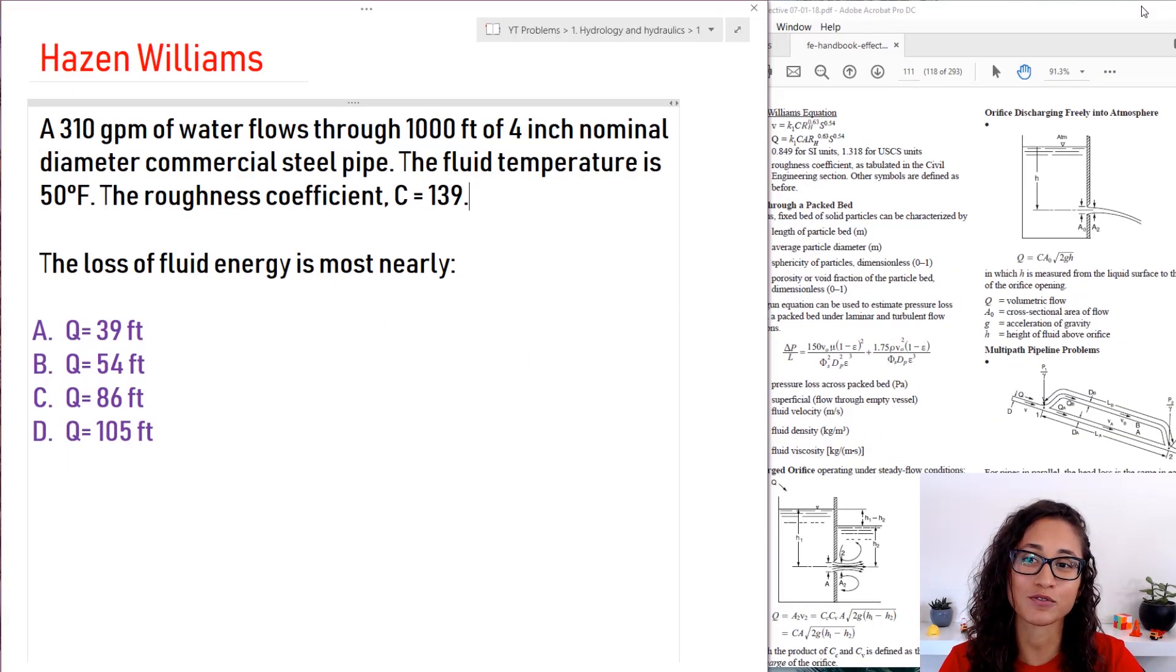Okay guys, so we're given a flow rate for water that's going through a 1000 feet pipe that has 4 inch diameter and the fluid temperature is 50 degrees Fahrenheit. The roughness coefficient C is 139. So whenever you see roughness coefficient C, you should think of Hazen-Williams and we need to calculate the loss of fluid energy, meaning we need to find the head loss due to friction in this pipe.